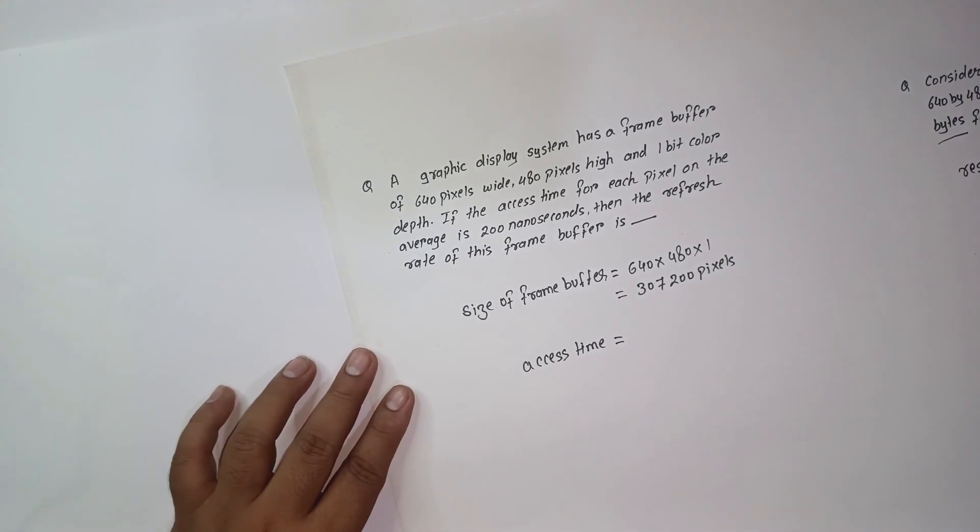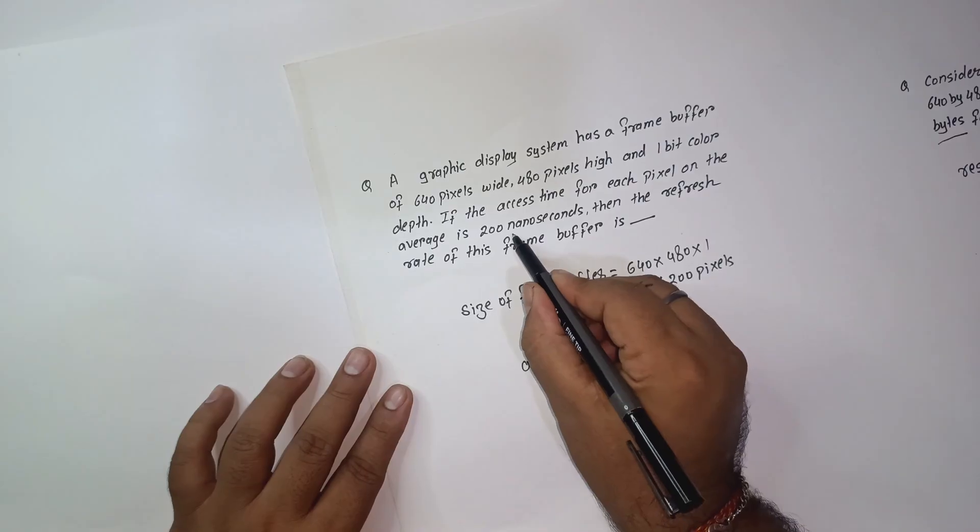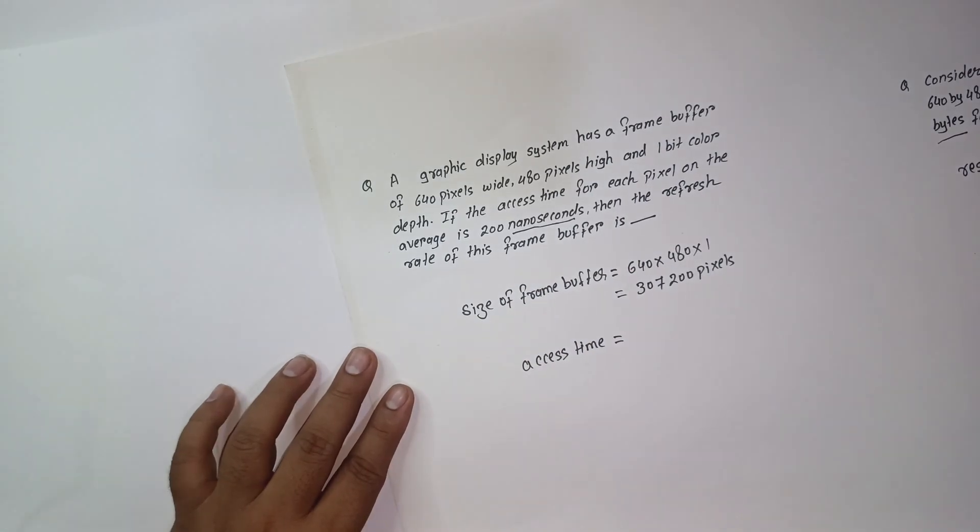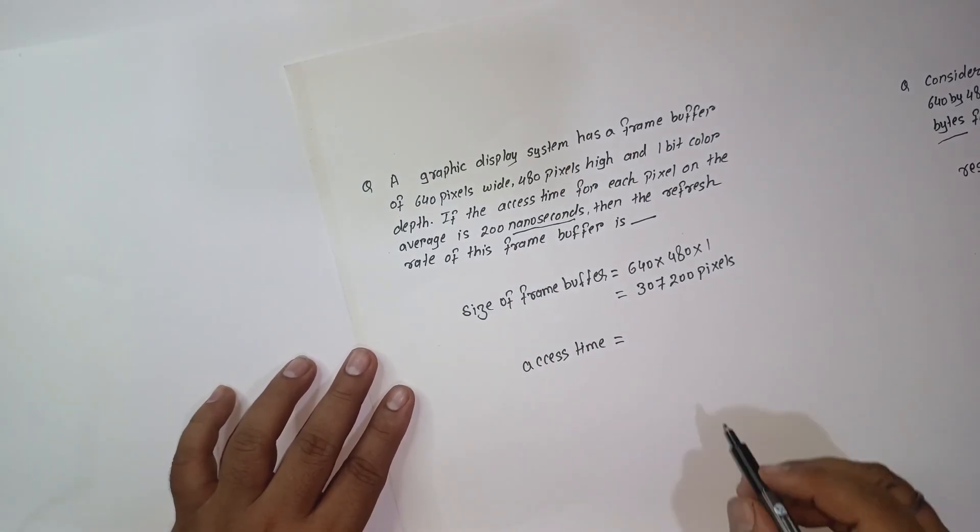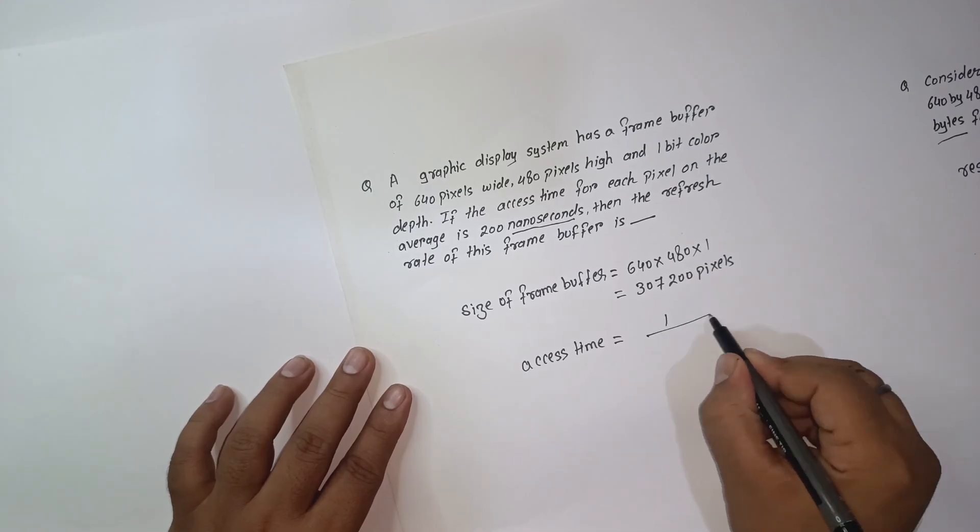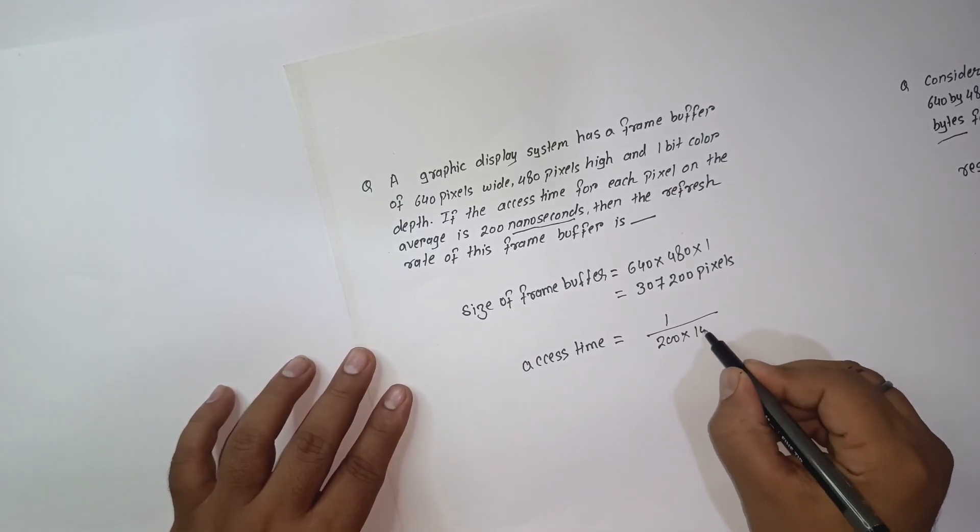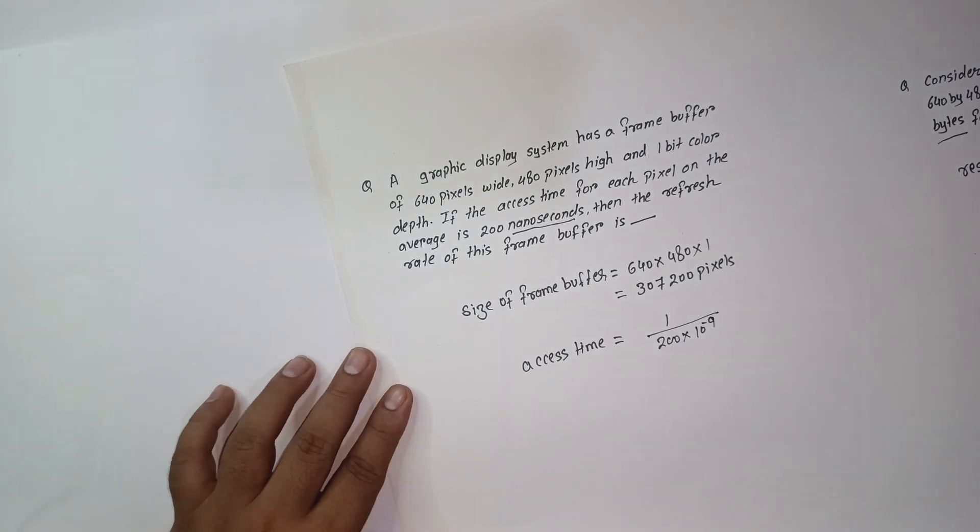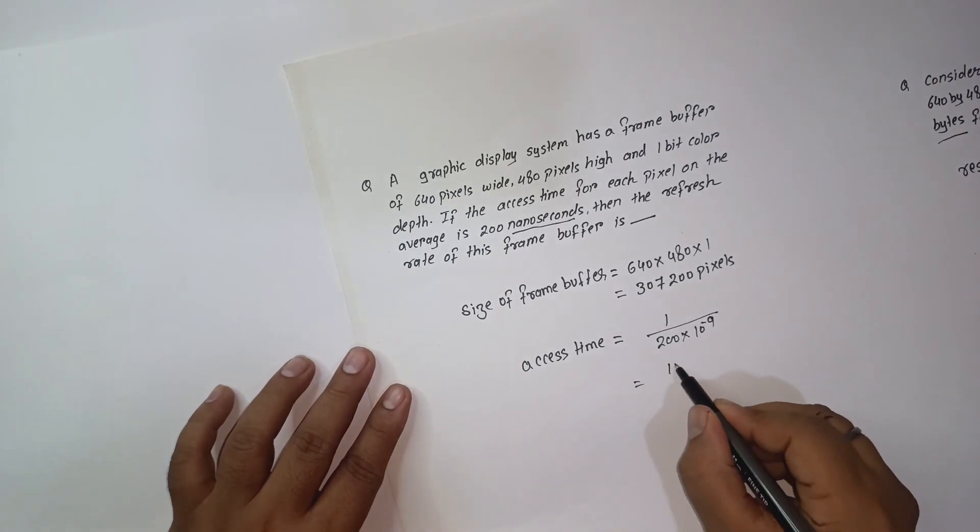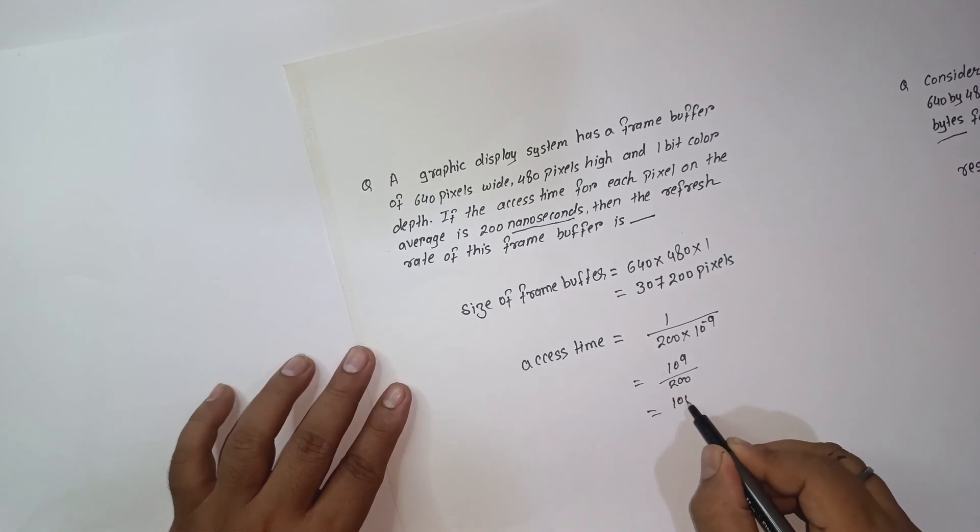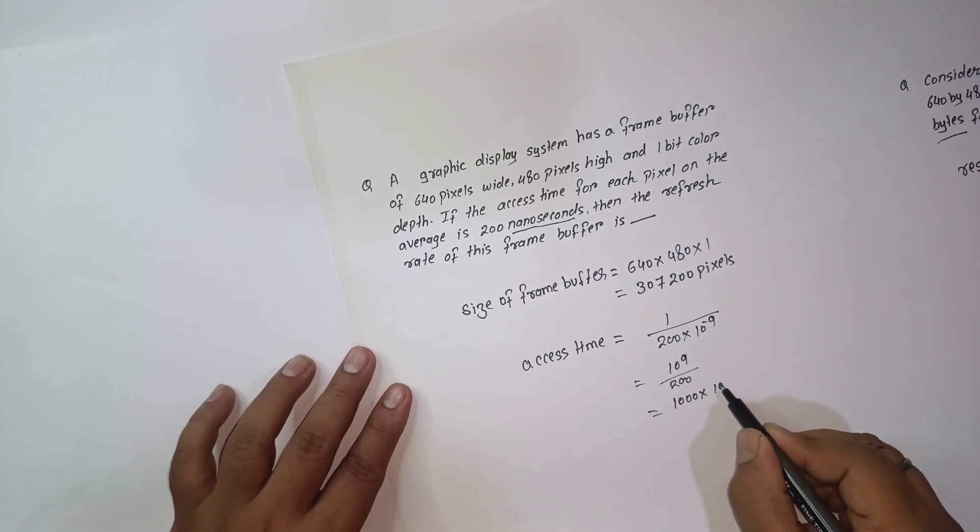It will be like 1 divided by 200. In 1 nanosecond we are having 10 raise to minus 9. So it is like 10 raise to 9 divided by 200. We can also write it like 1000 divided by 200.